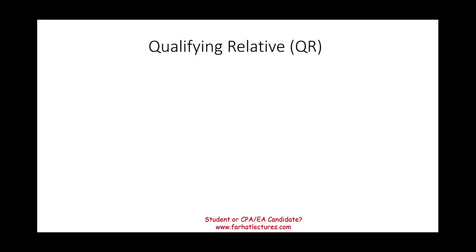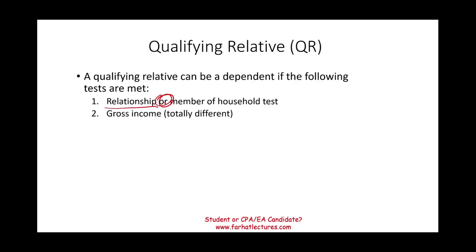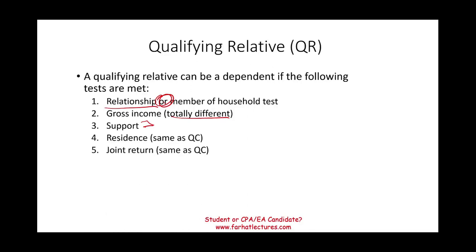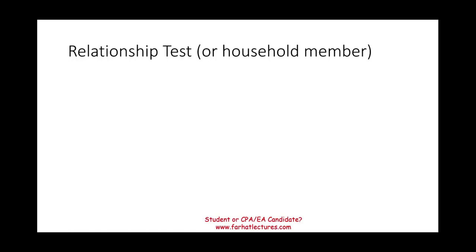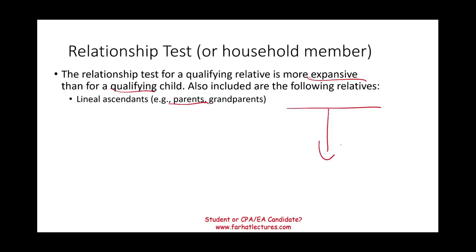Now let's look at the qualifying relative. A qualifying relative can be a dependent if the following tests are met: the relationship test or member of household test, gross income test, support test, residency test, and joint return test. For the relationship test, it's more expansive than for a qualifying child — you can include parents, grandparents, uncles and aunts, and certain in-laws such as son-in-law, daughter-in-law, father-in-law, mother-in-law, brother-in-law, and sister-in-law.